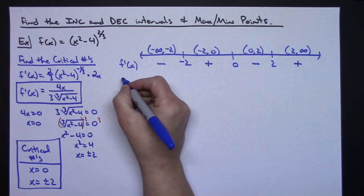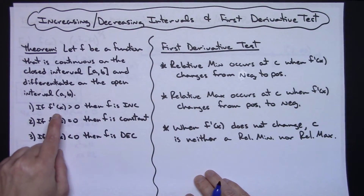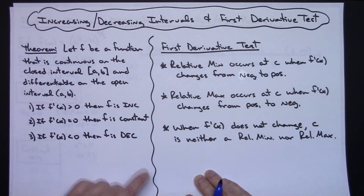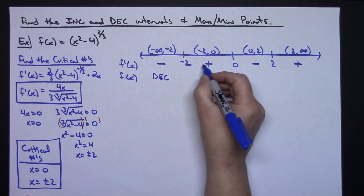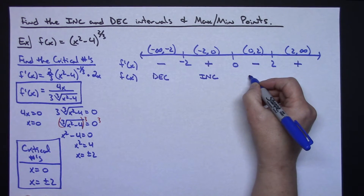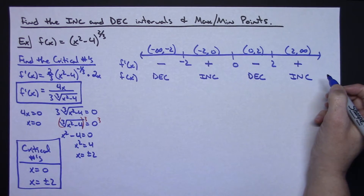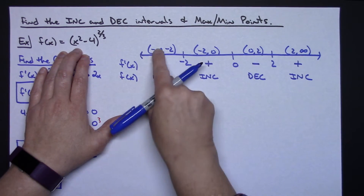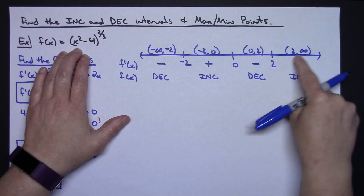Now I know exactly what my derivative is doing in each interval. From the first theorem: if the derivative is positive, the original function is increasing; if negative, it's decreasing. So the function is decreasing on negative infinity to negative 2, increasing on negative 2 to 0, decreasing on 0 to 2, and increasing from 2 to infinity — all without looking at a graph.